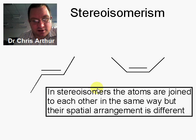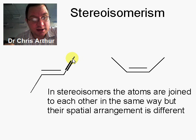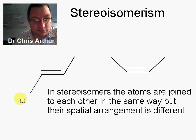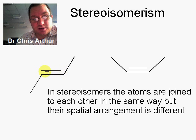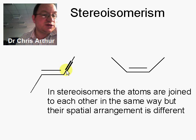In stereoisomers, the atoms are joined to each other in the same way, but their spatial arrangement in space is different. And this is one of the examples that you'll meet later on. This is an example of geometric isomerism due to the position of the groups around the double bond.